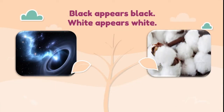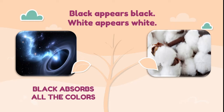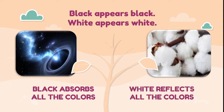But why does black appear black and white appear white? Black absorbs all the colors of light — that is why we see black — while white reflects all the colors of light, which is why we see white.